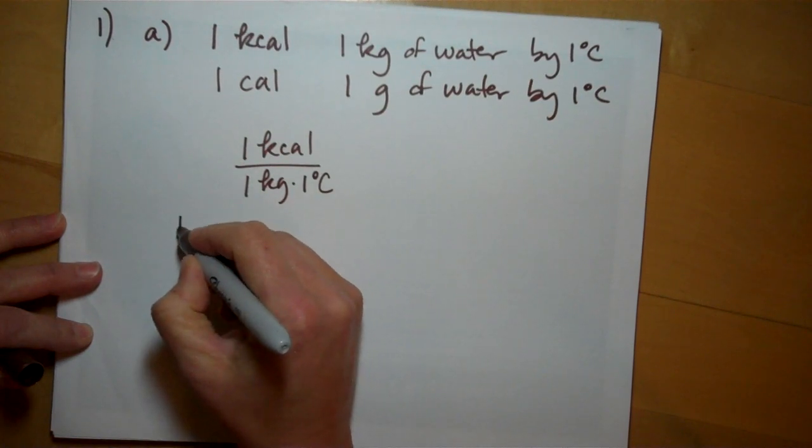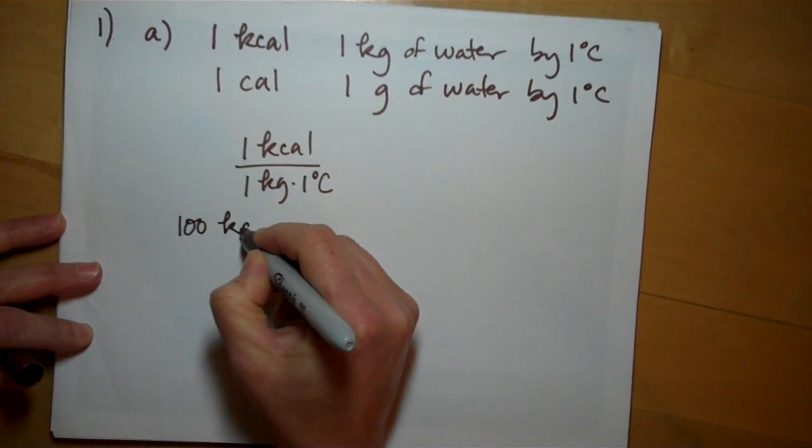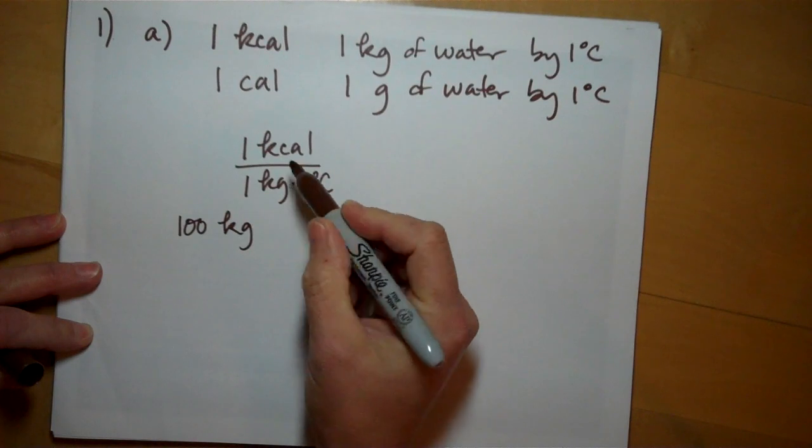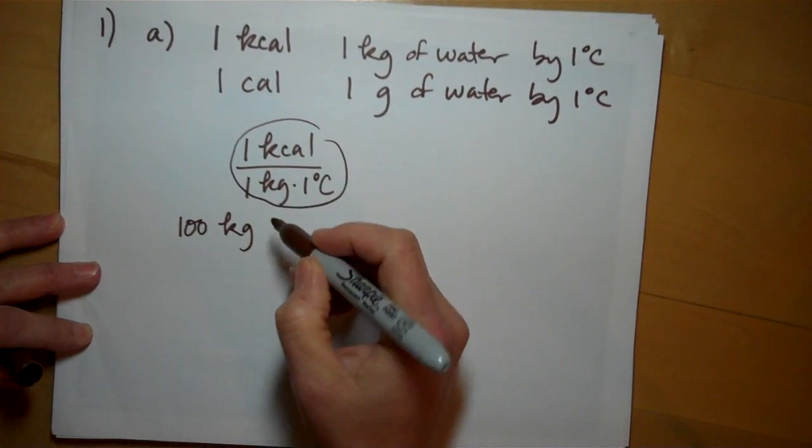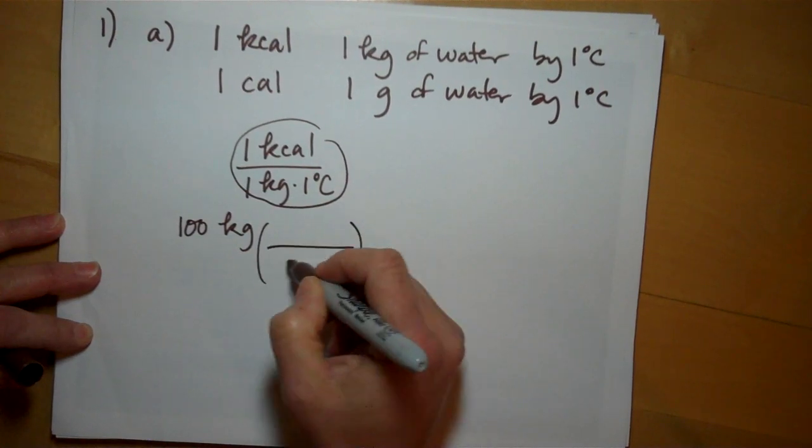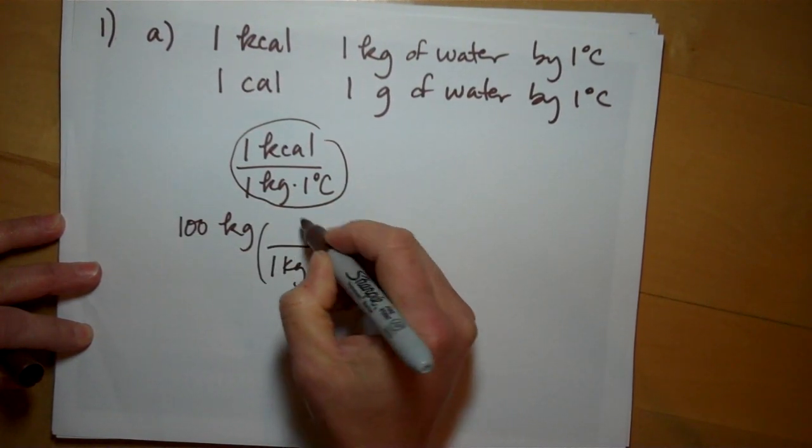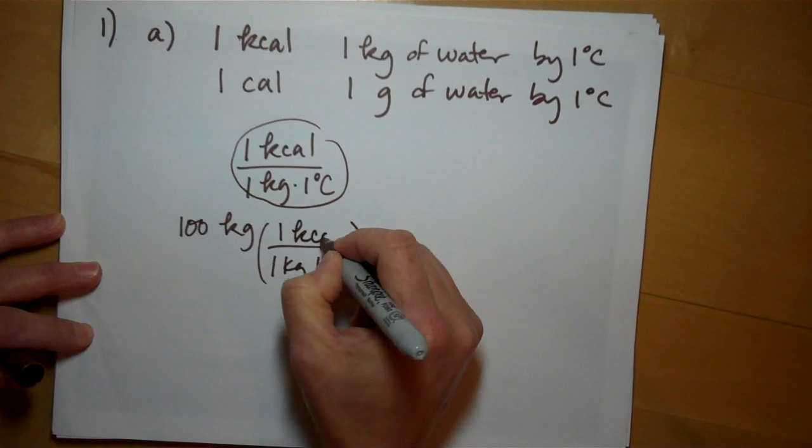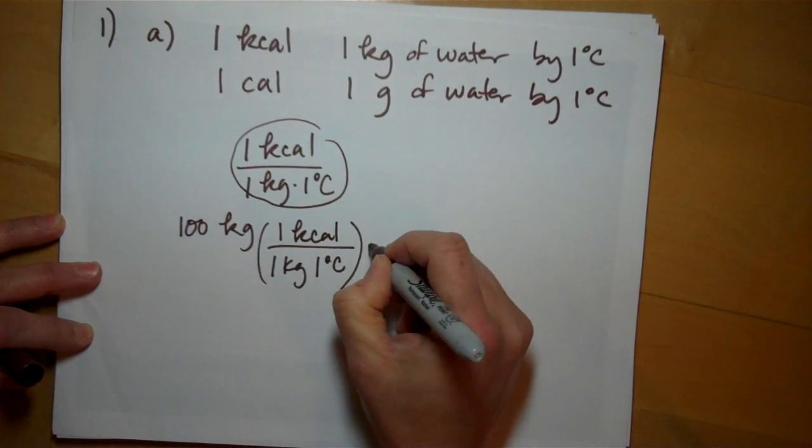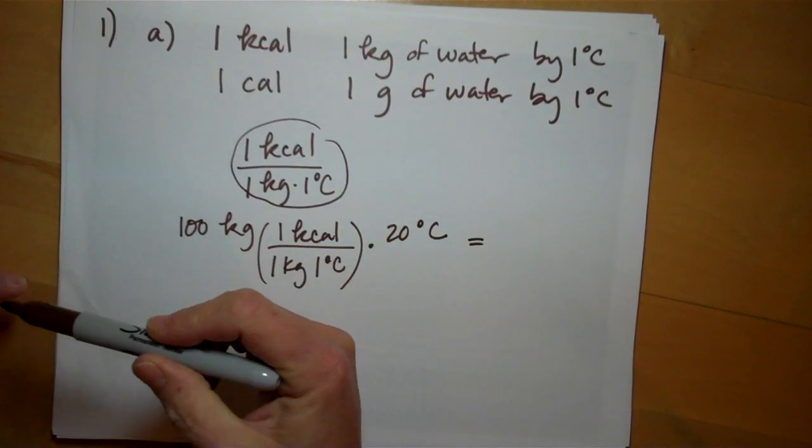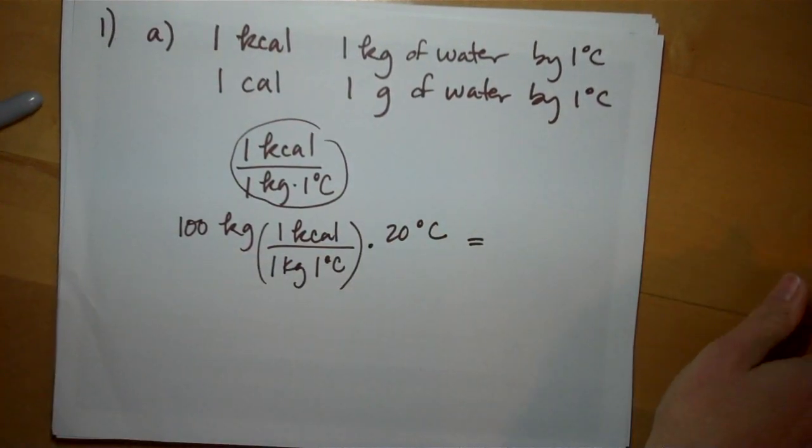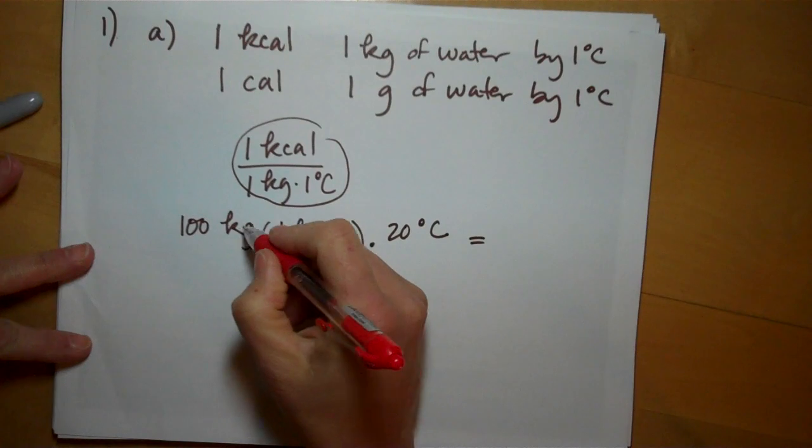They tell us there's a hundred kilograms in this bathtub and this is the equality that we know. For every one kilogram that you want to raise by one degree it takes one kilocalorie, but we want to raise it by twenty degrees.